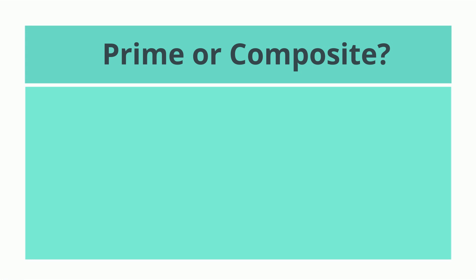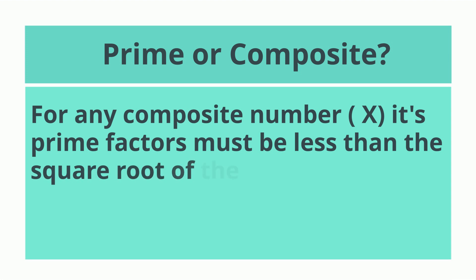To begin with, for any composite number, we'll call it x, its prime factors must be less than the square root of the number.